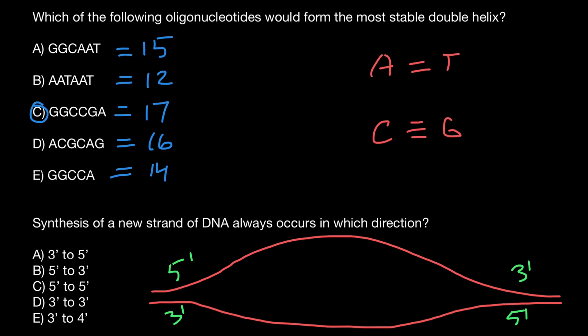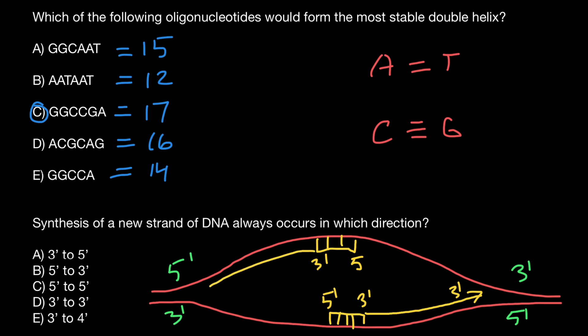Let's say here is our first primer, and it's going to have 5' here and 3' here. On the other strand of the DNA we would also have a primer, and it's going to have 5' here and 3' here. The new strand of DNA would grow continuously from 5' to 3' on one strand of the DNA.